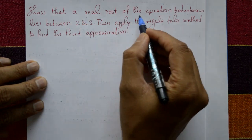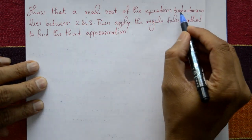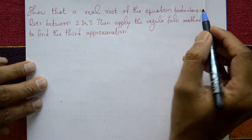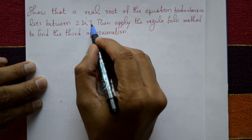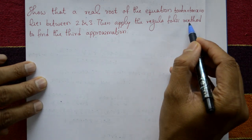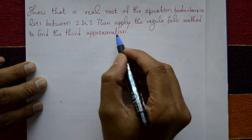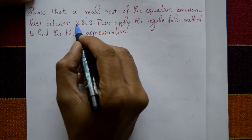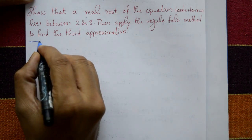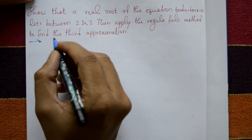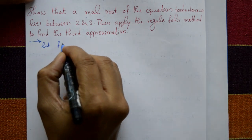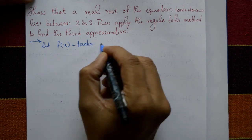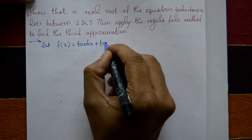Show that a real root of the equation tanh(x) + tan(x) = 0 lies between 2 and 3, then apply the Regula Falsi method to find the third approximation. The roots are given as 2 and 3. Let f(x) = tanh(x) + tan(x).